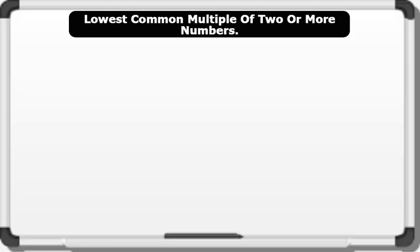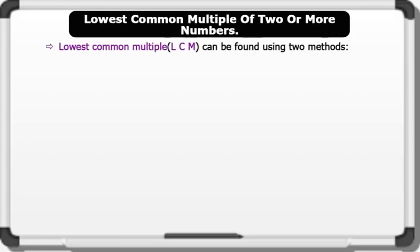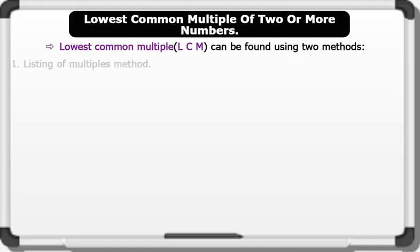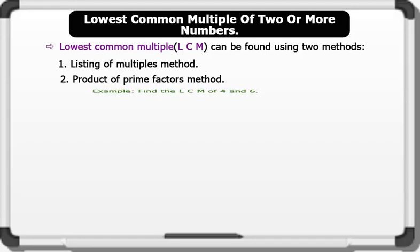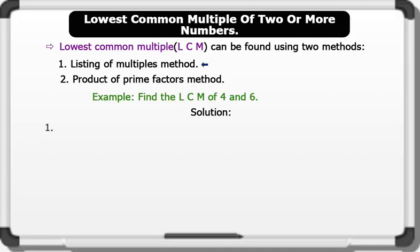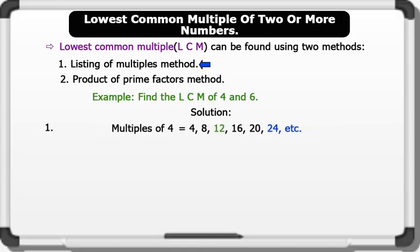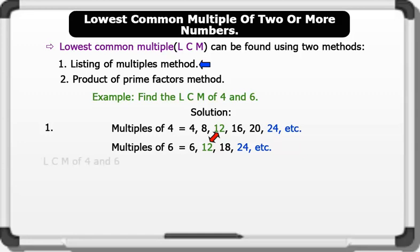Lowest common multiple of two or more numbers: the LCM can be found using two methods — method 1: listing of multiples; method 2: product of prime factors. Example: find the LCM of 4 and 6. Solution using the listing of multiples method: the multiples of 4 are 4, 8, 12, 16, 20, 24, etc. The multiples of 6 are 6, 12, 18, 24, etc. Notice that 12 and 24 are common, but 12 is the lowest common multiple. Therefore the LCM of 4 and 6 is 12.